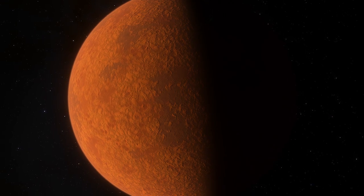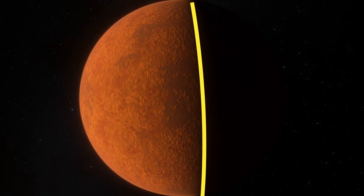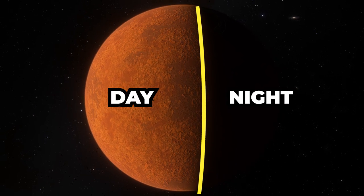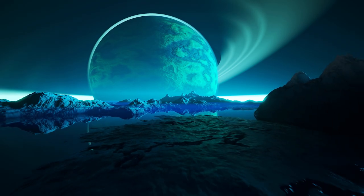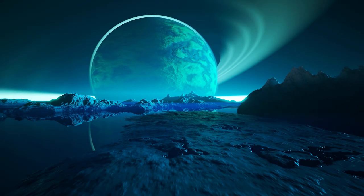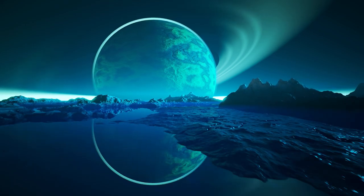The most likely area for life to exist on a tidally locked planet would be the narrow band between the day and night sides, known as the terminator or twilight zone. In this region, temperatures could be moderate, allowing for liquid water and a more stable environment.